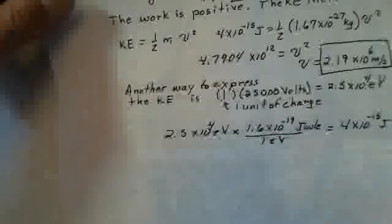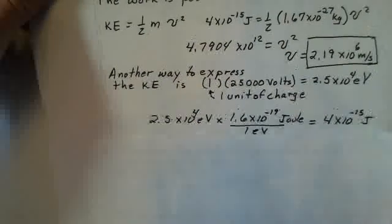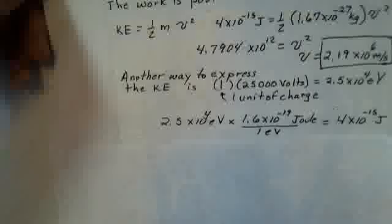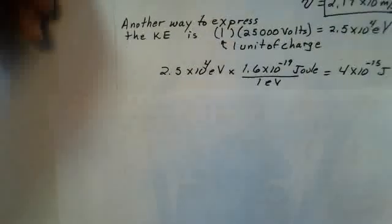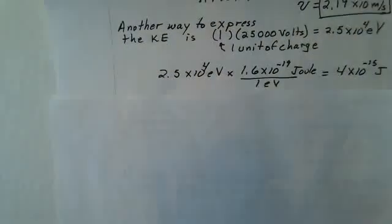And then, if I want to convert this back into joules, maybe as a double check, 2.5 times 10 to the 4th electron volts. There's a conversion factor between joules and electron volts. 1.6 times 10 to the minus 19 joules is 1 electron volt. So I get the same energy I had before in joules, 4 times 10 to the minus 15.